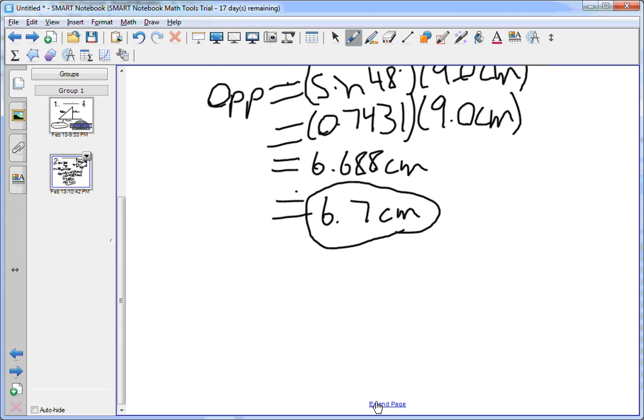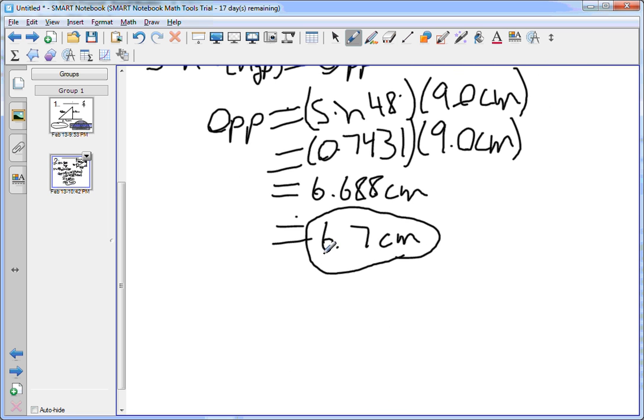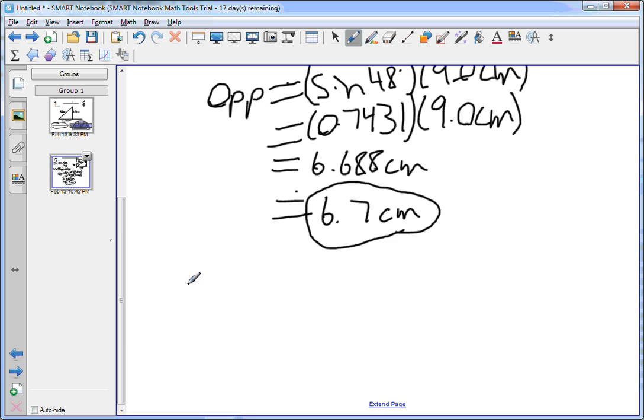We can further determine from our cosine law, our cosine relationship, that cos theta equals adjacent over hypotenuse.